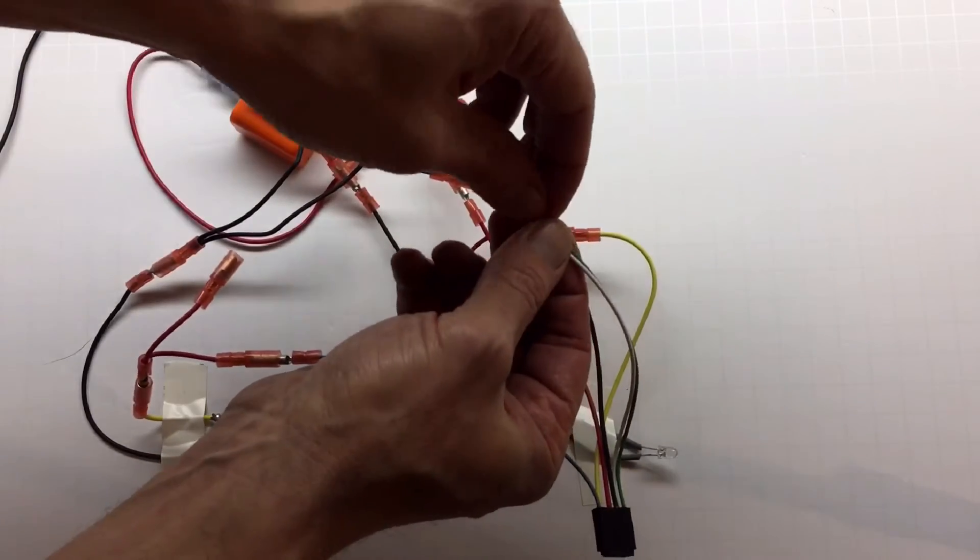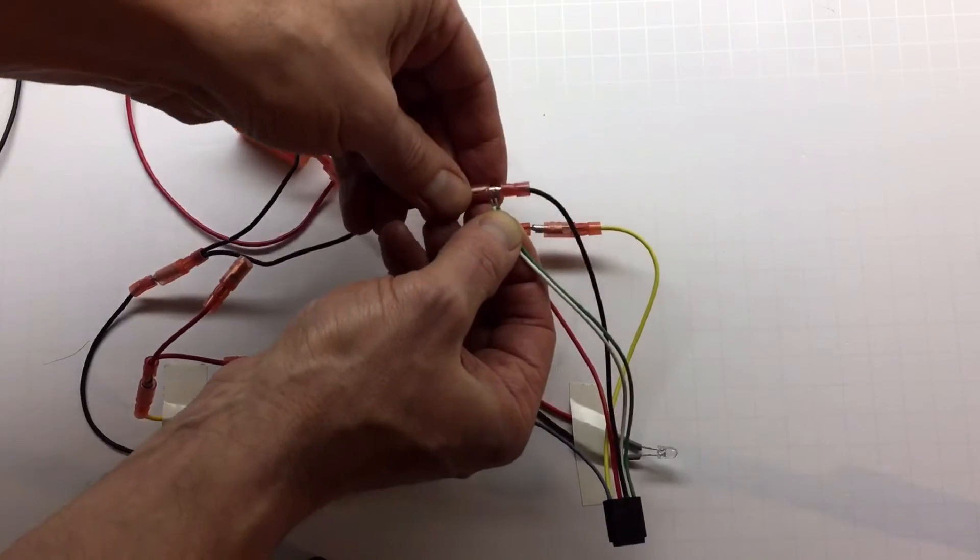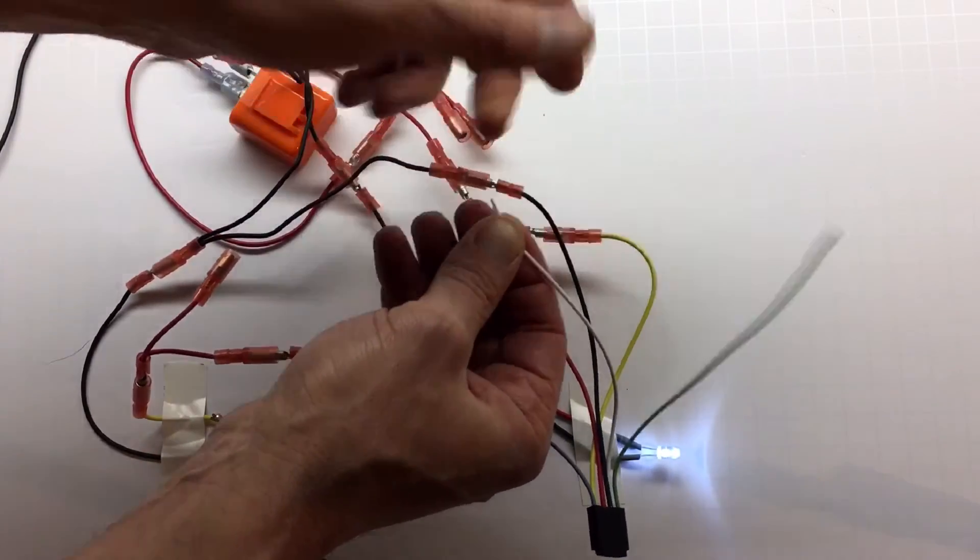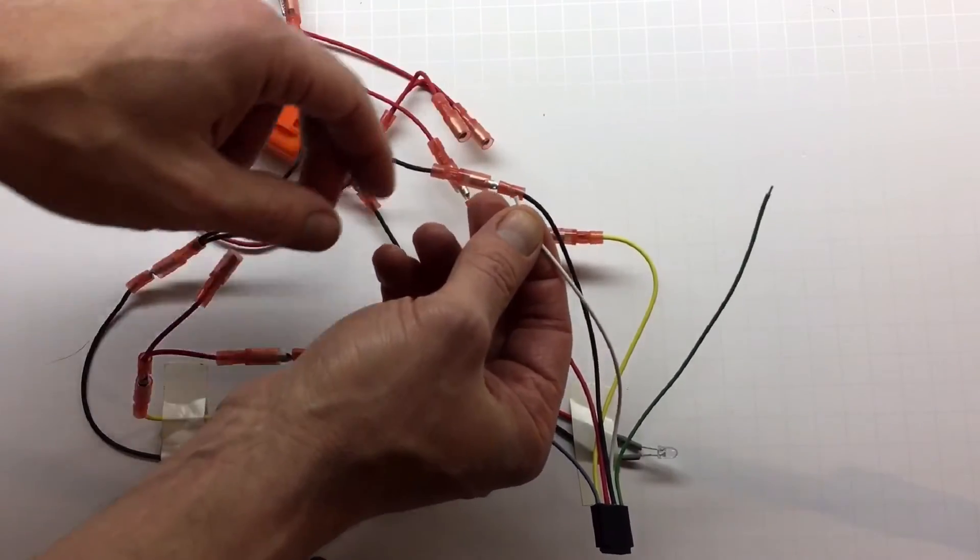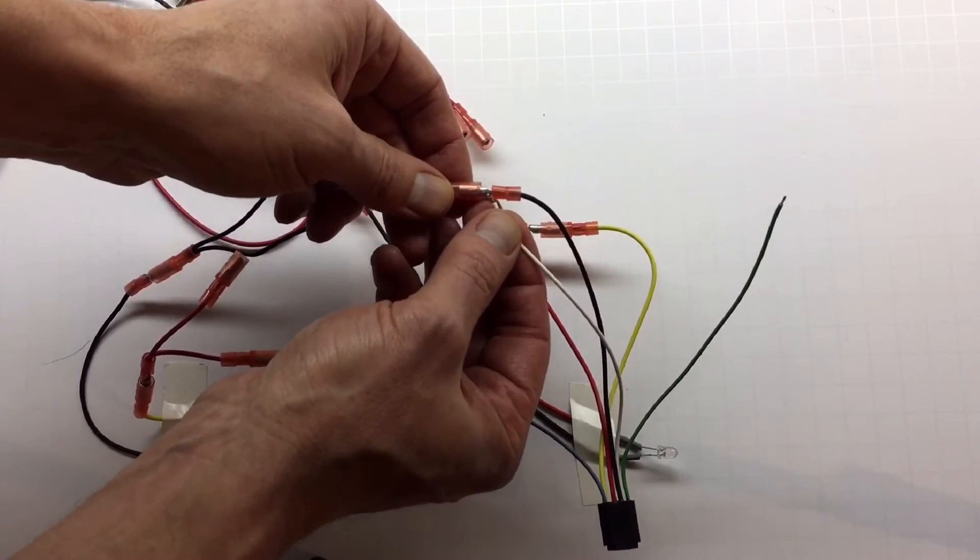And now we're going to take two wires again, green and white, and short them to the ground. That goes to the next menu, which is the function. And we need to configure the function. So we take the white wire and touch the ground 13 times.